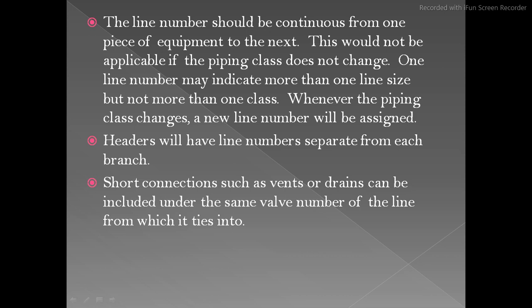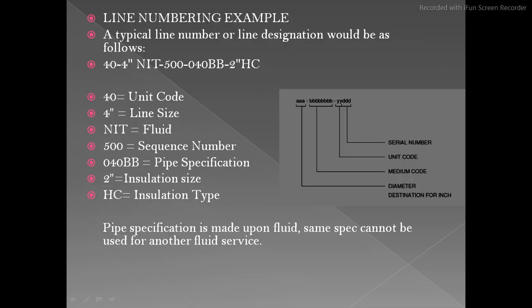If you have one line and it is connecting to a vent or a drain, it will not have another line number — it should be considered under the same line number as the parent line.